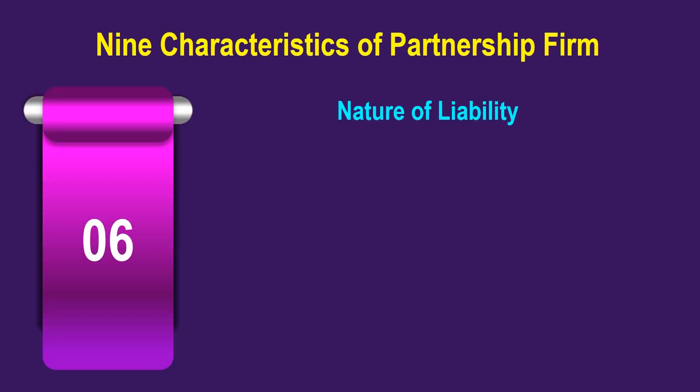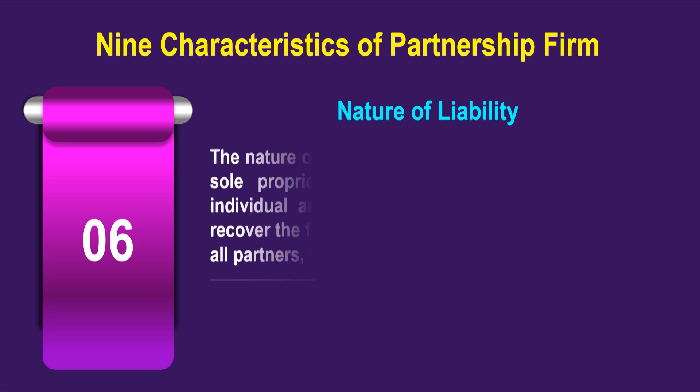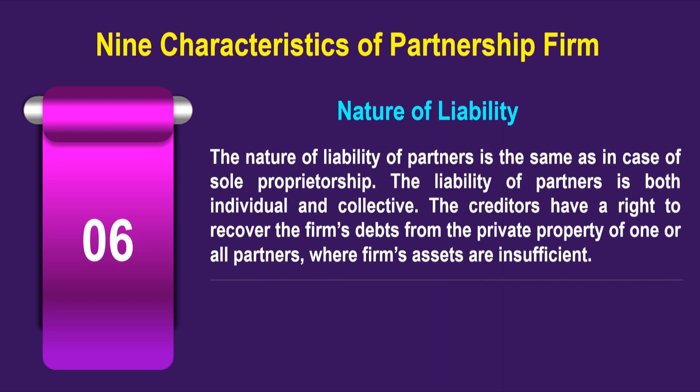The sixth characteristic is regarding the nature of liability. The nature of the liability of the partners is the same as in the case of sole proprietorship. The liability of a partner is both individual and collective — creditors have a right to recover the firm's debts from the private property of one or all the partners where the firm's assets are insufficient.